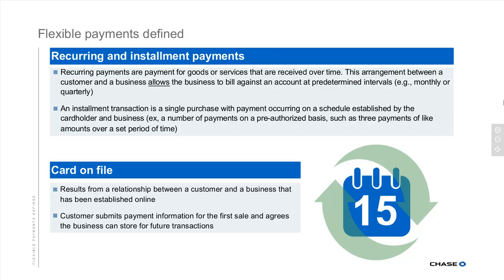A recurring payment for goods and services — many of you are familiar with Netflix or other subscription services. Another type of flexible payment is an installment transaction where your payment will be broken into pieces and the credit card may be hit three times. We're going to focus much more on the recurring or subscription type. A card on file means there's a relationship between the customer and your business established ahead of time, and that customer agrees to continue using that credit card for future transactions.